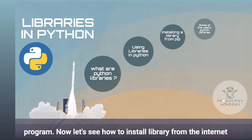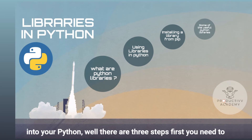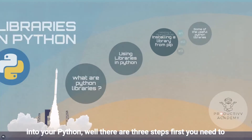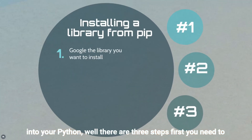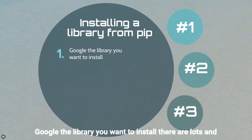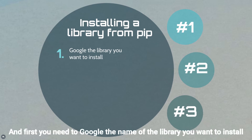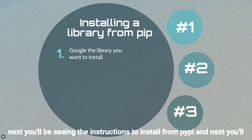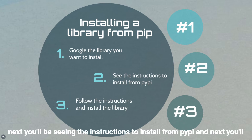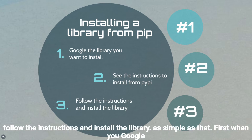Now let's see how to install a library from the internet into Python. There are three steps: first, Google the library you want to install; next, find the instructions on PyPI; and then follow those instructions and install the library. It's as simple as that.